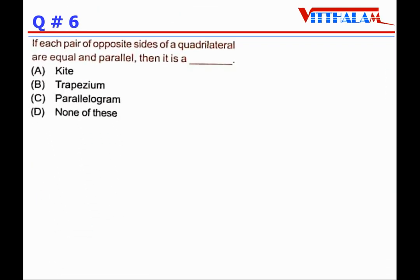If each pair of opposite sides of a quadrilateral are equal and parallel, then it is a parallelogram. In a kite, adjacent sides are equal, not opposite sides. In a trapezium, only one pair of sides is parallel. So the correct answer is parallelogram, option C.